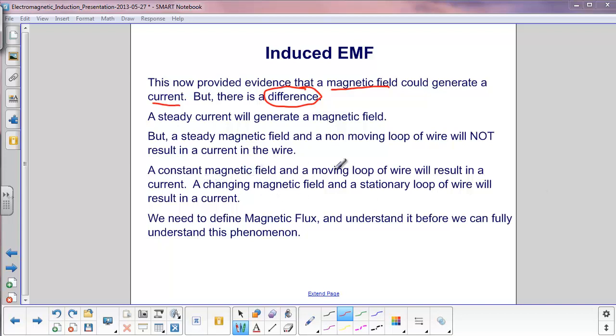A constant magnetic field and a moving loop of wire will result in a current. That's Faraday's disk generator. We had a constant magnetic field, but we were spinning that disk inside the magnetic field. Also, a changing magnetic field and a stationary loop of wire will result in a current. That was Faraday's first experiment with the iron core.